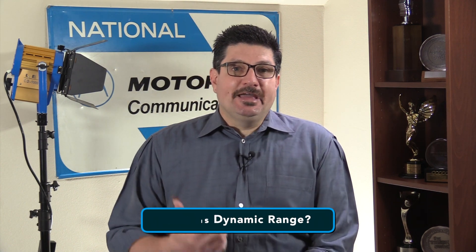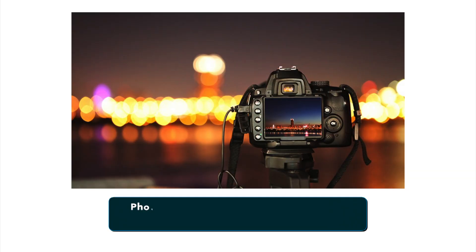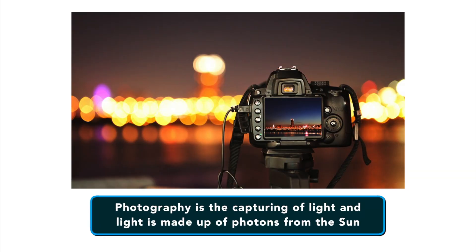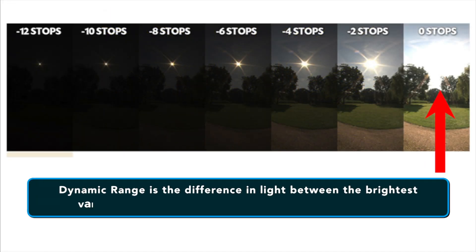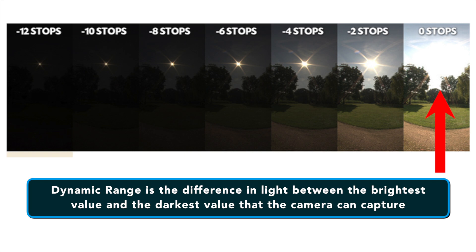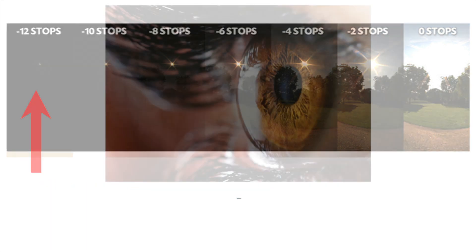Before I can explain what tonal range is, I need to explain what dynamic range is because it directly affects tonal range. So what is dynamic range? In its simplest form, photography is the capturing of light, and light is made up of photons from the Sun. Dynamic range is the difference in light between the brightest value and the darkest value that the camera can capture.